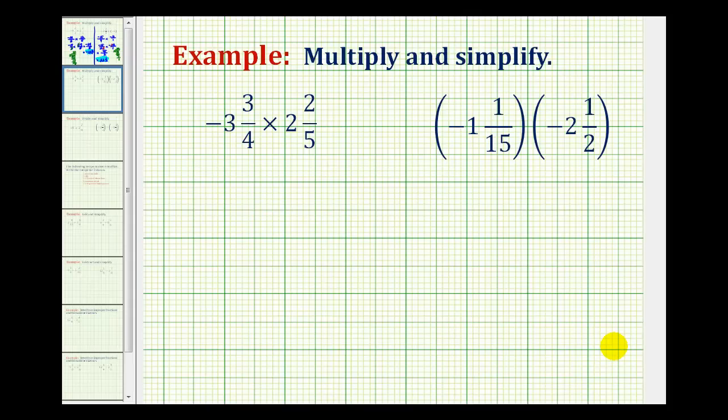I wanted to take a look at two more examples of multiplying signed mixed numbers. The first thing we'll do here is convert these to improper fractions, then we'll simplify, and then finally we'll multiply.